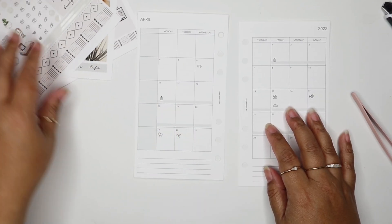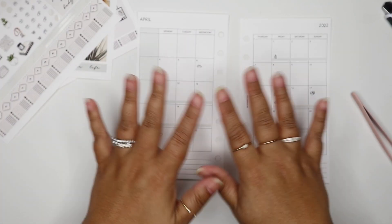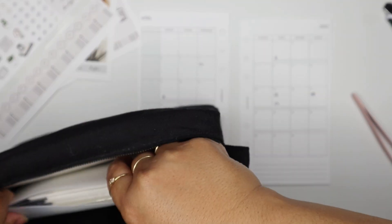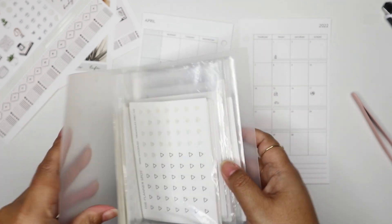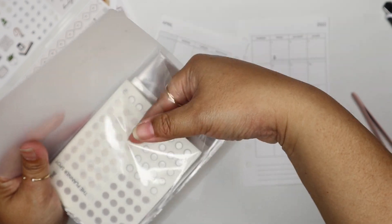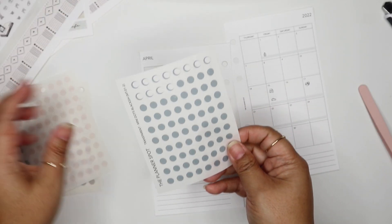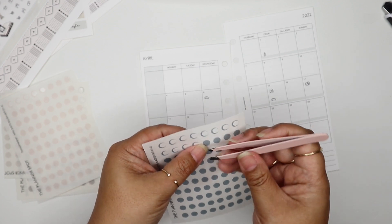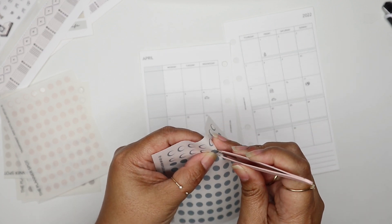After I do that, then I put in the business stuff. Usually I start with our subs. I get my sticker book here and my transparent dots.